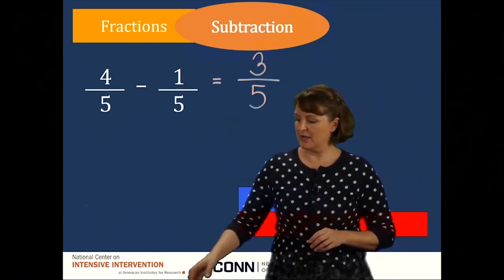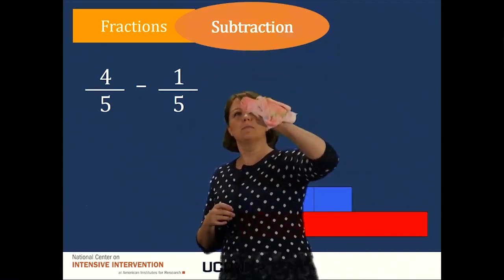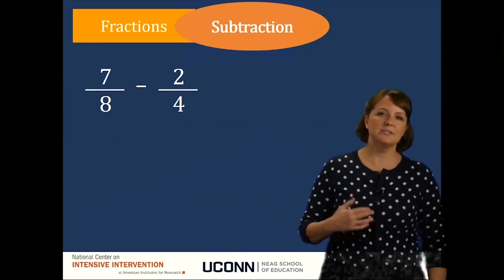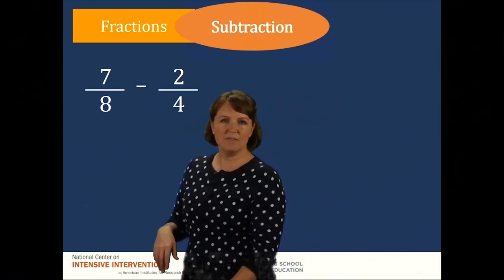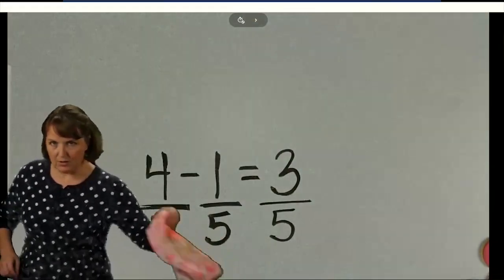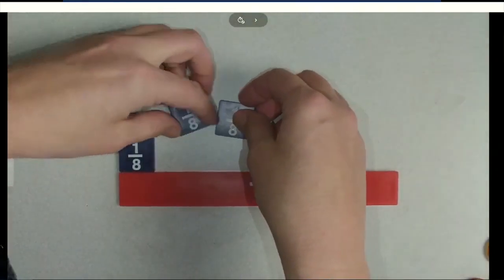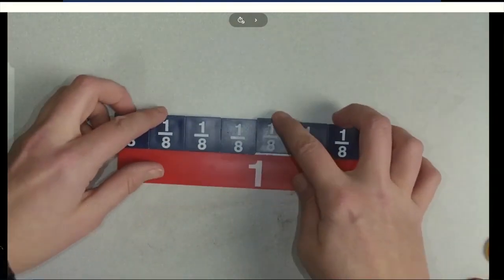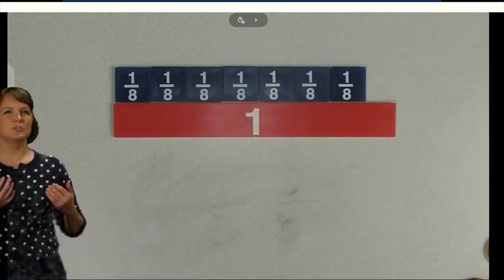Now the next fraction we're going to look at is one where we do not have common denominators. We'll work on this problem: seven-eighths minus two-fourths. Let's see what it looks like when we're solving it with the concrete manipulatives. Seven-eighths minus two-fourths — I like to challenge myself and get out lots of manipulative pieces. Let's double-check that my work is correct.